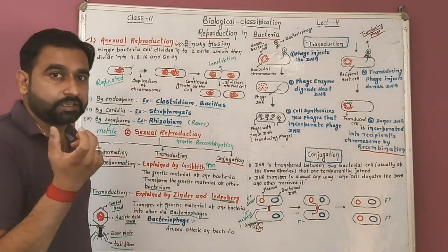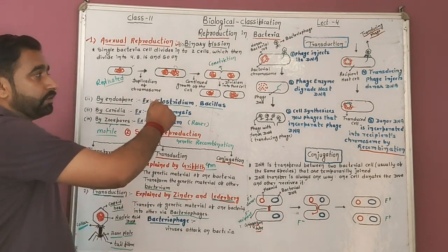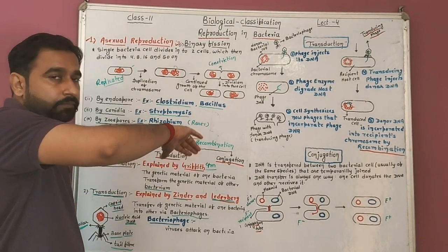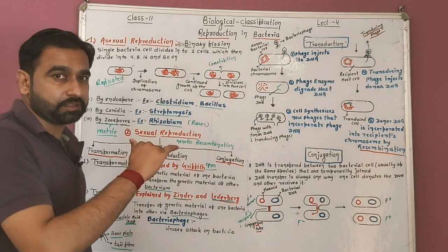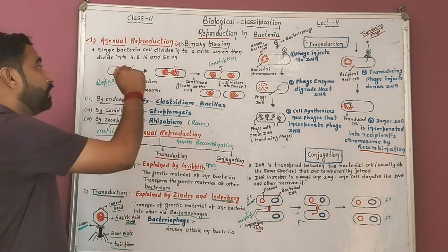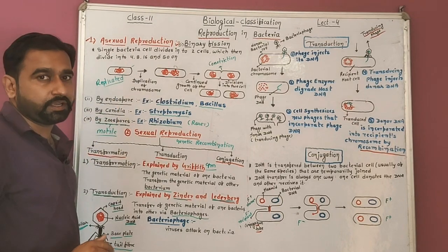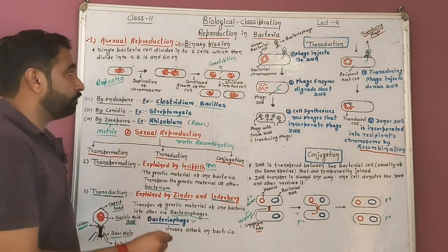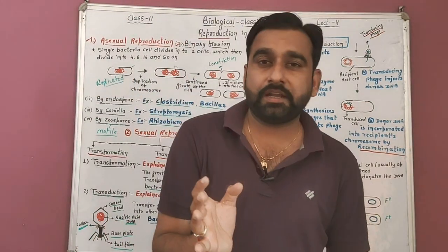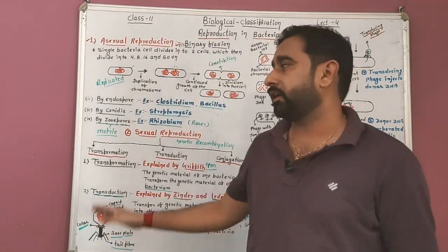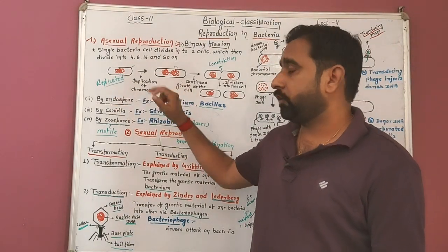When we studied the structure of the bacterial cell, we noted that the plasma membrane makes an inside folding, and after this inside folding it creates a structure called the mesosome. In binary fission, first of all the genetic material — the chromosome — binds or attaches to the mesosome. In this condition, the chromosome undergoes replication — it makes its own copy.